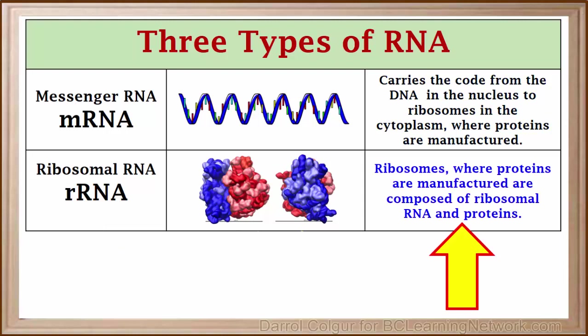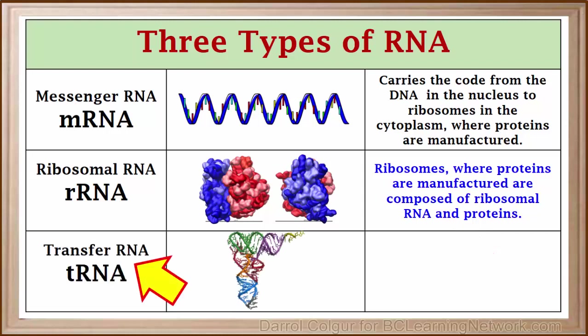Ribosomes, the organelles in the cytoplasm where proteins are made, are themselves composed of ribosomal RNA and other proteins. The third type of RNA is called transfer RNA or tRNA.